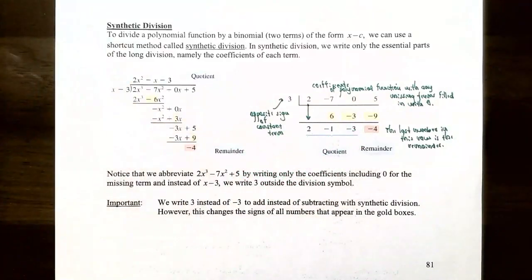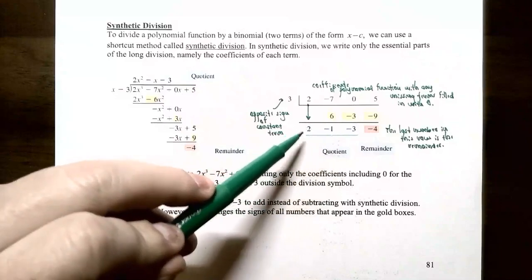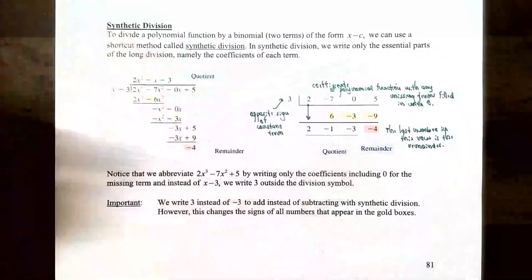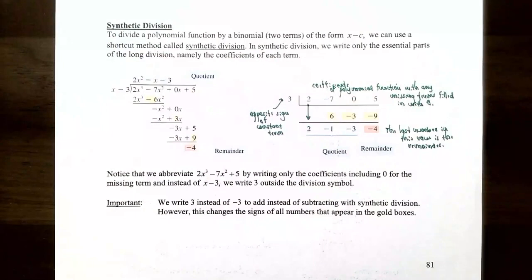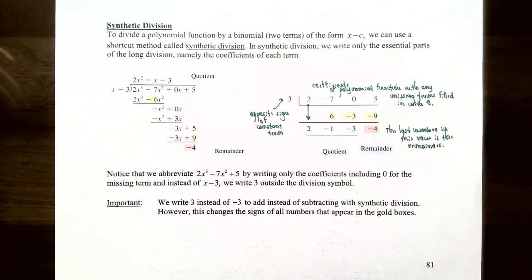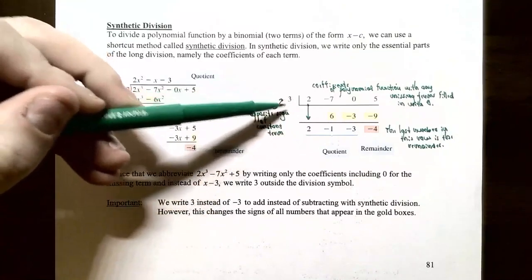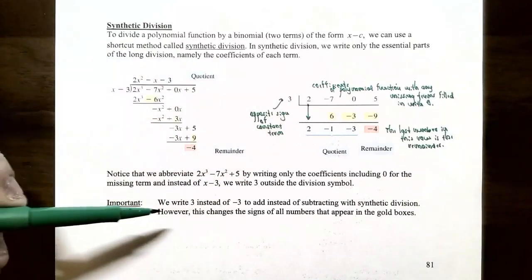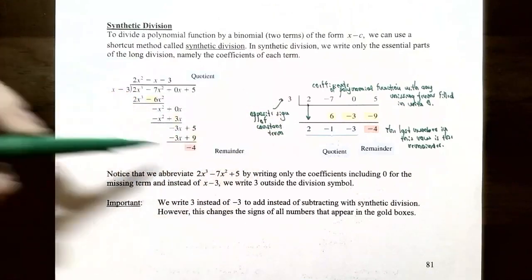The bottom row is extremely important in synthetic division. The last term is the remainder, the next is the constant term, then the x term, and so on. Fill in missing terms with zeros. The divisor must be of the form x - c: whatever follows the subtraction sign is the number that goes outside. So for x - 3, you write 3, not -3. Using the positive value lets you add throughout, rather than subtract as in long division.